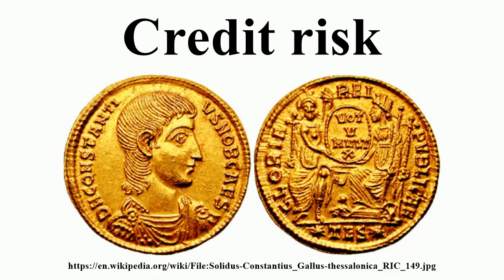Companies like Standard & Poor's, Moody's, Fitch Ratings, DBRS, Dun & Bradstreet, Bureau van Dijk and Rapid Ratings International provide such information for a fee. Most lenders employ their own models to rank potential and existing customers according to risk, and then apply appropriate strategies. With products such as unsecured personal loans or mortgages, lenders charge a higher price for higher-risk customers and vice versa. With revolving products such as credit cards and overdrafts, risk is controlled through the setting of credit limits. Some products also require collateral, usually an asset that is pledged to secure the repayment of the loan.